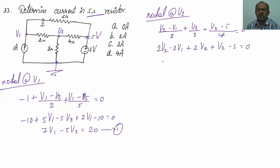Collecting terms: minus 2V1 plus 5V2 equals 5. Let me call this equation 2.